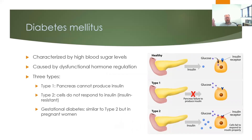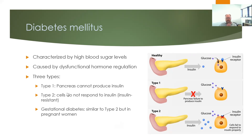What happens in the case of diabetes? Diabetes occurs when these signaling pathways get disrupted. There are three types. Type 1 diabetes is an autoimmune disease where the pancreas can no longer make insulin. Type 2 diabetes occurs when the body stops responding properly to insulin. And gestational diabetes is similar to type 2 in that the body stops responding to insulin, but it's a transient effect that occurs during pregnancy.